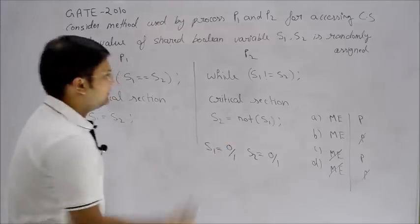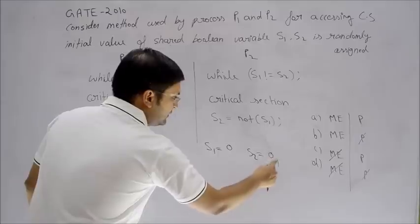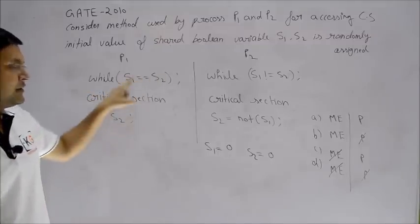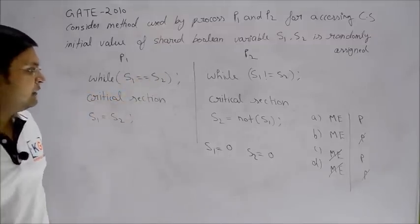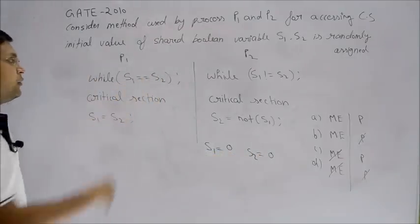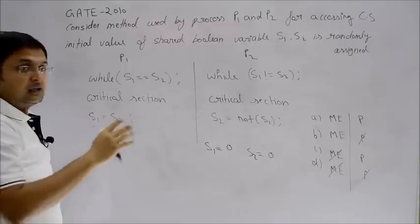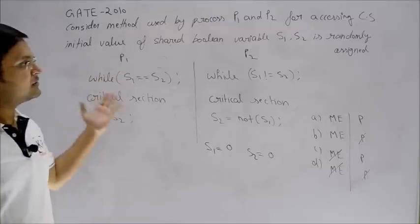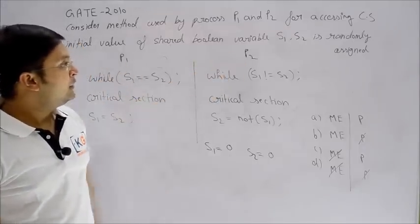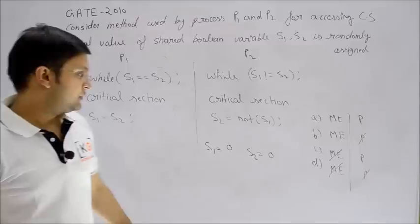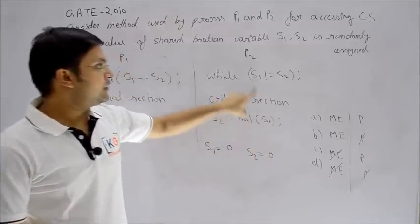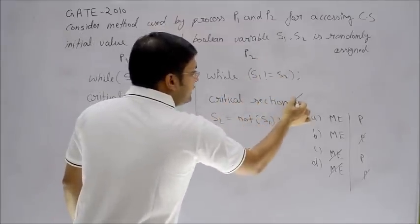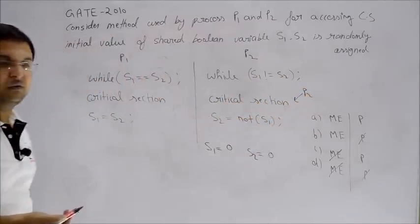Values are randomly assigned initially, so let's say the initial value of both is 0. We'll try to run process P1. It says s1 == s2 — this is a comparison. We have s1 = 0, s2 = 0, so the condition is true. When the condition is true, we stay in the loop. So P1 keeps oscillating in the loop. After some time, charge goes to P2. P2 checks: s1 != s2, i.e., 0 != 0 — condition is false, so P2 comes out of the loop and enters the critical section.